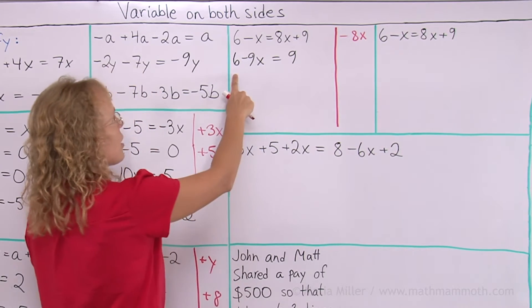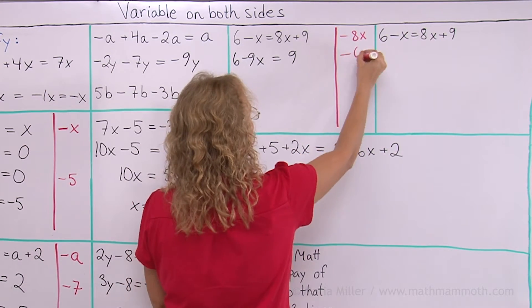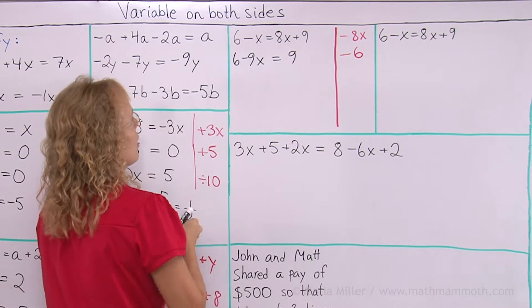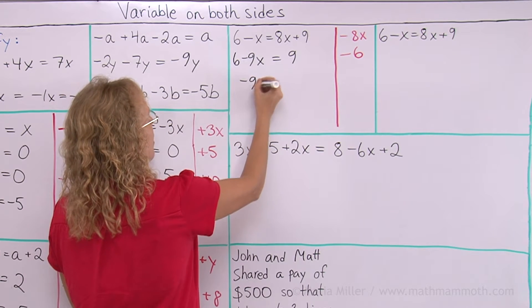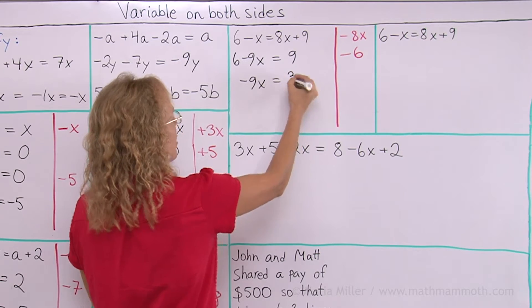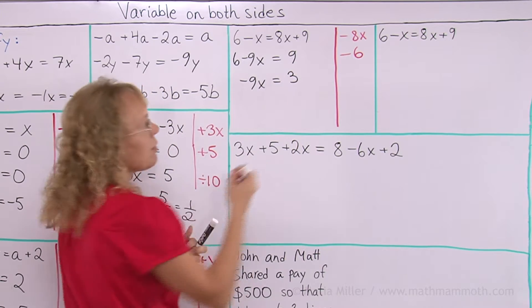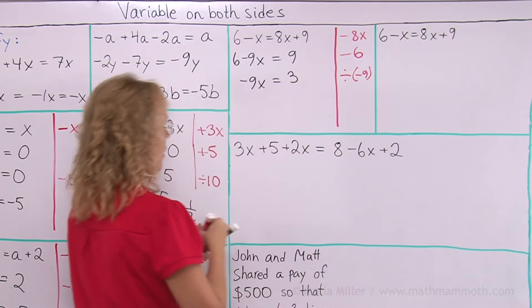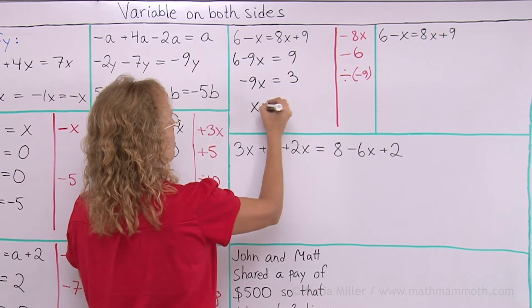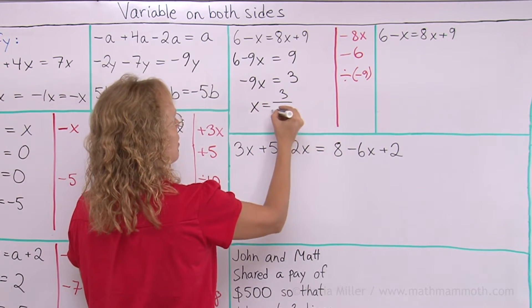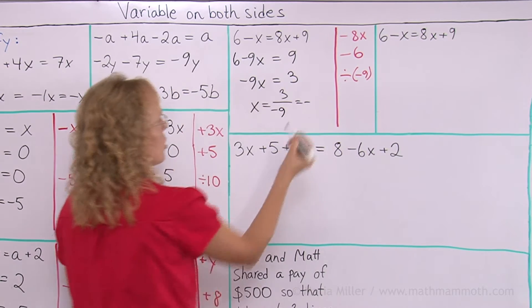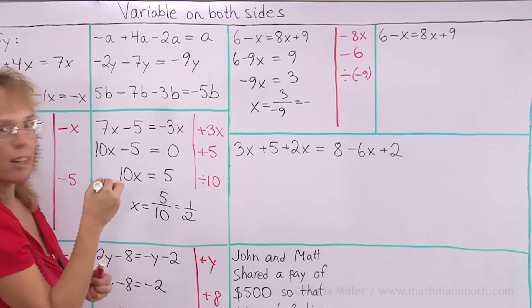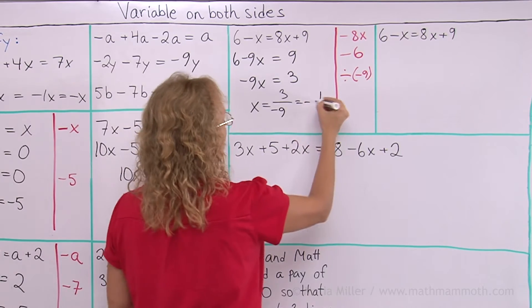Next step is to get rid of the 6, so I subtract 6. And that leaves negative 9x, and here 9 minus 6 is 3. And lastly, I divide by negative 9, so I get x equals 3 over negative 9, which is a negative fraction, and then 3 ninths simplifies into 1 third.